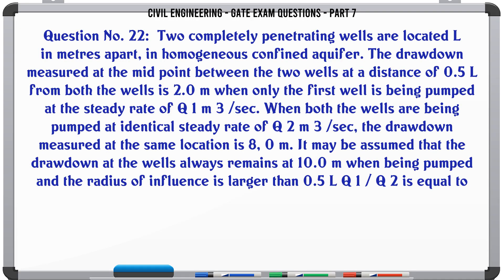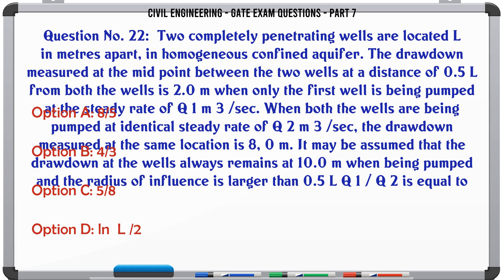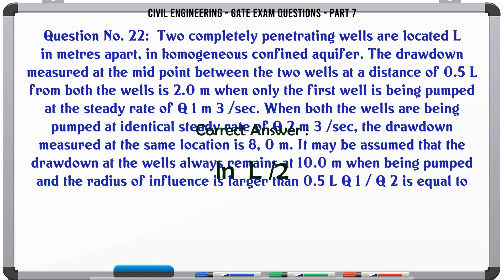Two completely penetrating wells are located L meters apart in a homogeneous confined aquifer. The drawdown at the midpoint (0.5L from both wells) is 2.0 m when only the first well is pumped at steady rate q1 m3/s. When both wells are pumped at identical steady rate q2 m3/s, the drawdown at the same location is 8.0 m. The drawdown at each well always remains at 10.0 m when being pumped and the radius of influence is larger than 0.5L. q1/q2 is equal to: A) 8/5, B) 4/3, C) 5/8, D) ln(L)/ln(2). The correct answer is ln(L)/ln(2).